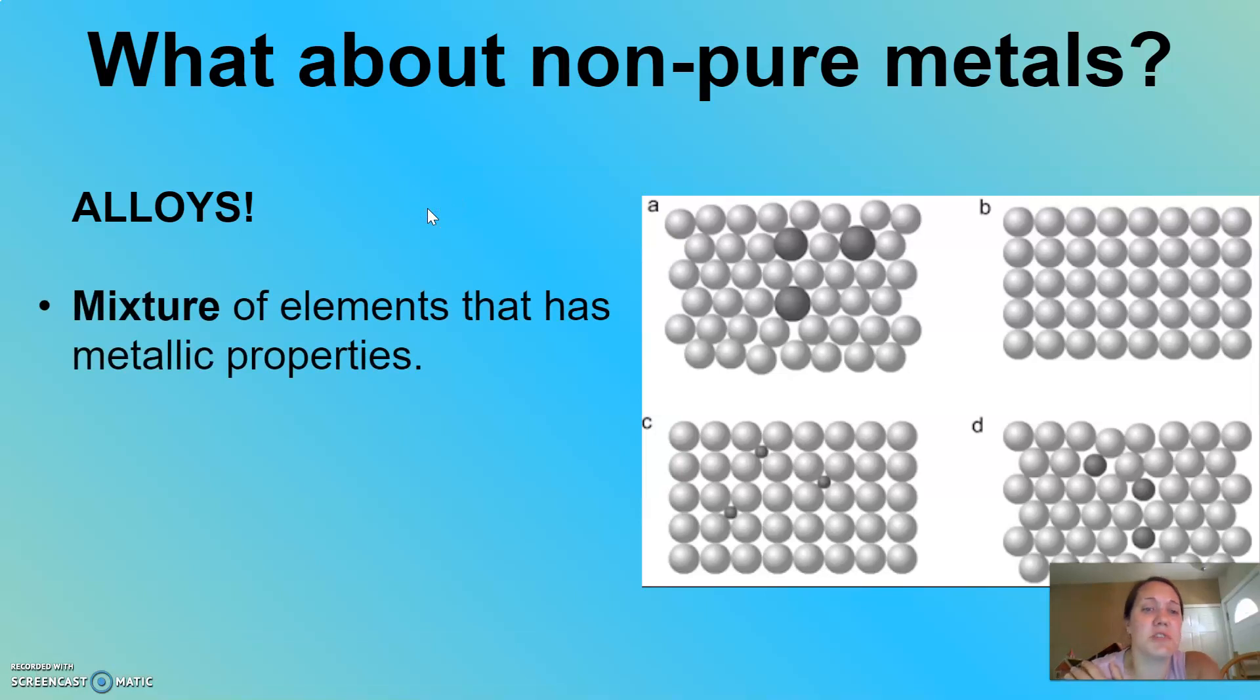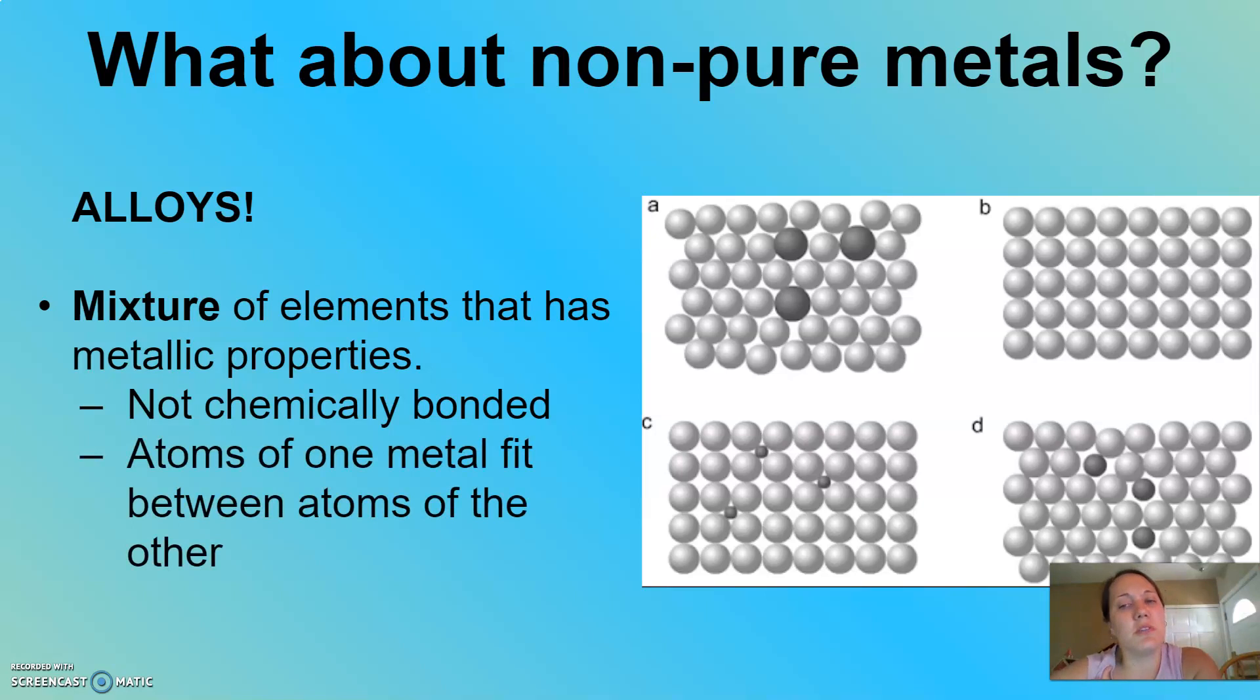So an alloy is just a mixture of elements, of metallic elements. And it's kind of weird because in all actuality, these metals right here do contribute to the sea of electrons. So why isn't it considered a bond? And it's just not. They're just considered mixtures because they can be separated relatively easily. We don't consider them to be chemically bonded. By definition, a metallic bond exists between only atoms of the same metal. Once we introduce other metals into it, it's now considered an alloy.